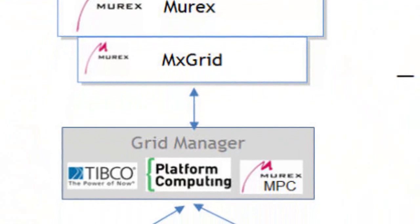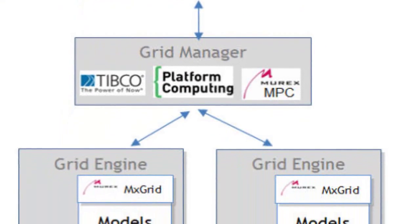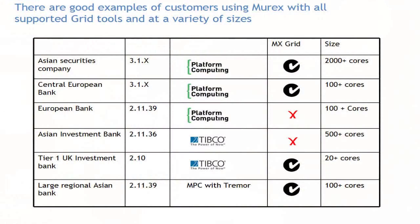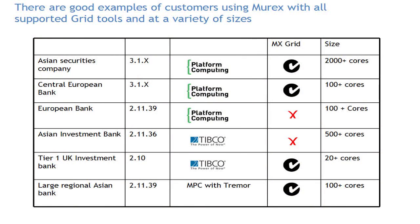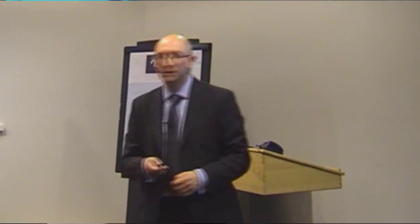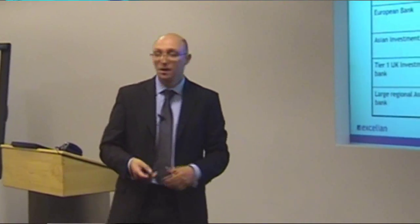It works like this: there's a piece on the Murex server and there's a piece on the grid engine, and the translation between them essentially allows you to use the scheduler from any one of these vendors. There are successes and we've done a lot of implementations of this at different sizes — from 20 cores up to 2,000 cores — with Platform Computing, with DataSynapse, using MX grid and without. The message from Murex is quite right: yes, of course you can do this without using MX grid, but it's not recommended. With MX grid you get a supported, fully plug-and-playable, slottable capability.